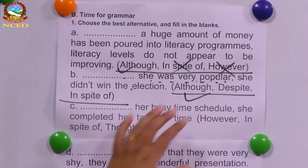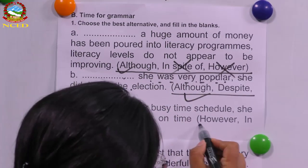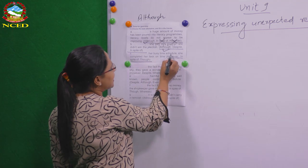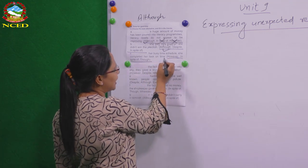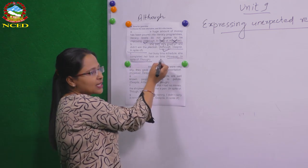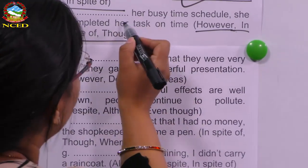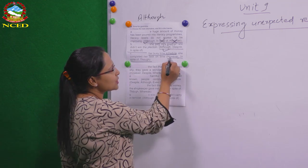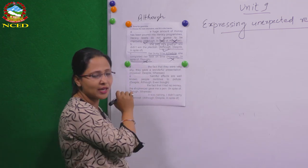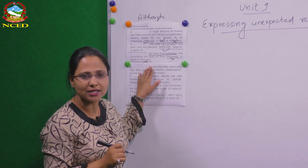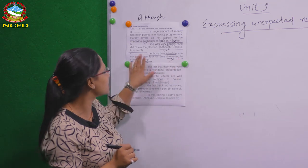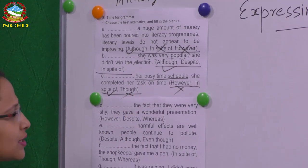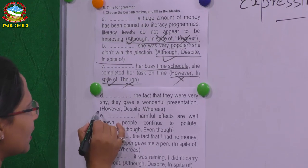The options for the next one are 'however,' 'in spite of,' and 'though.' 'Her busy time schedule, she completed her task on time.' The gap is before a noun phrase, so you don't use 'however' before a phrase, and you don't use 'though' before a phrase either. The only option left is 'in spite of.' Answer: 'In spite of her busy time schedule, she completed her task on time.'